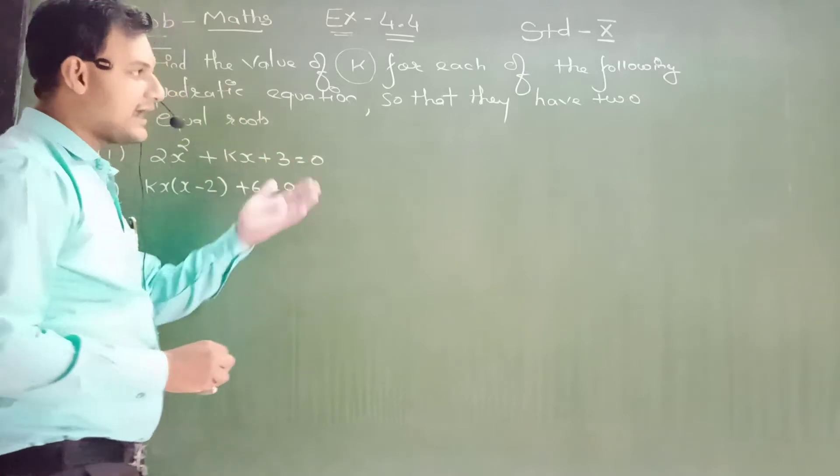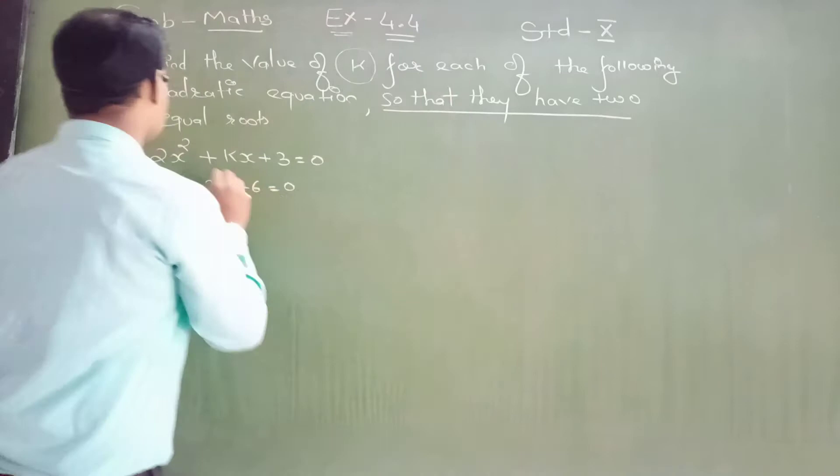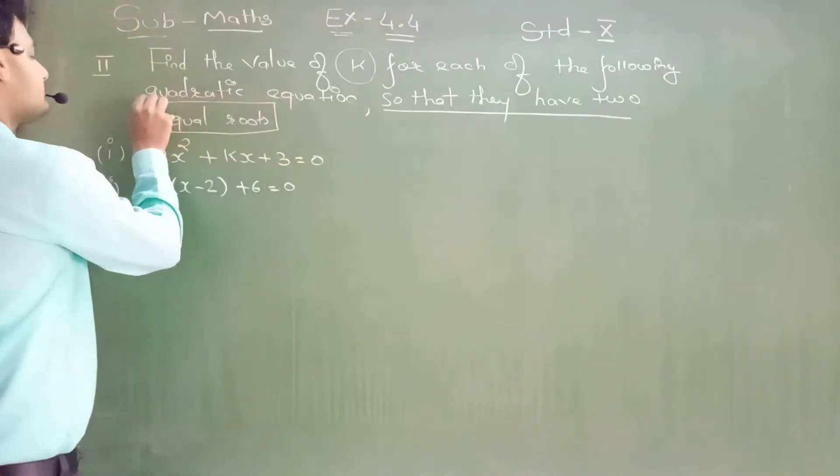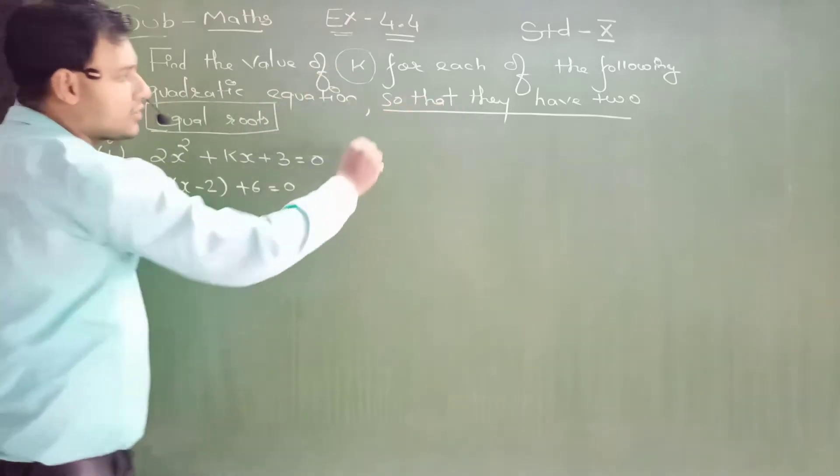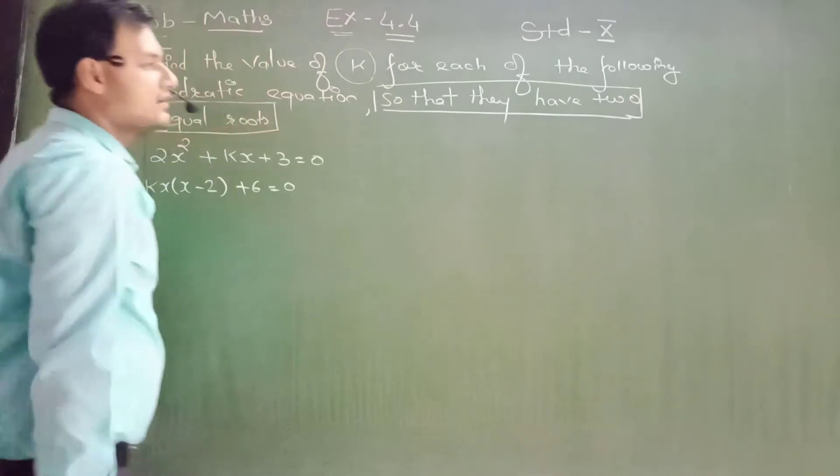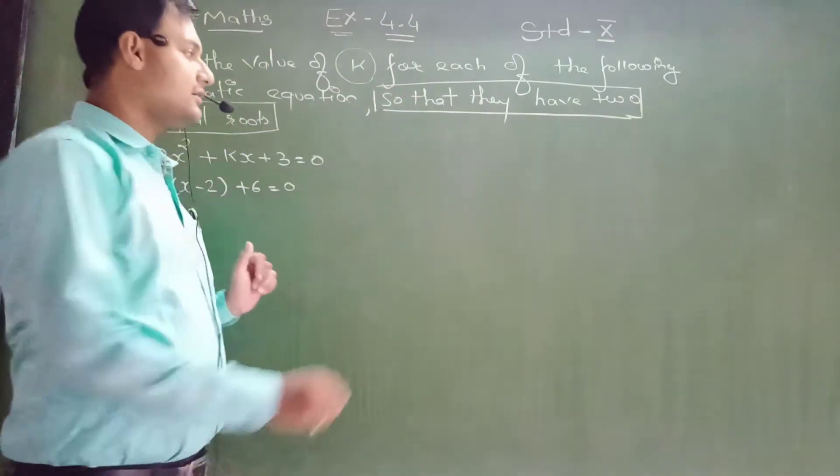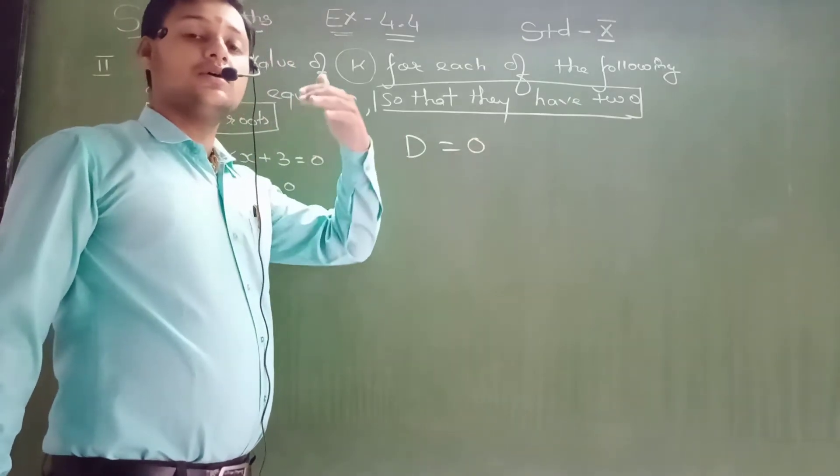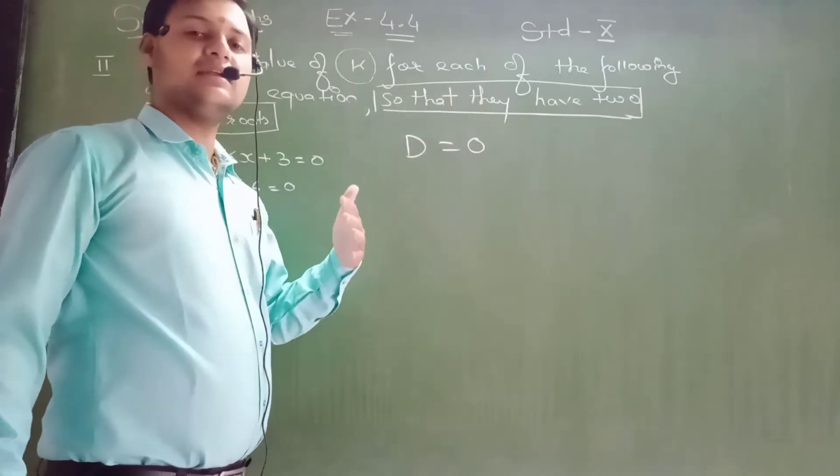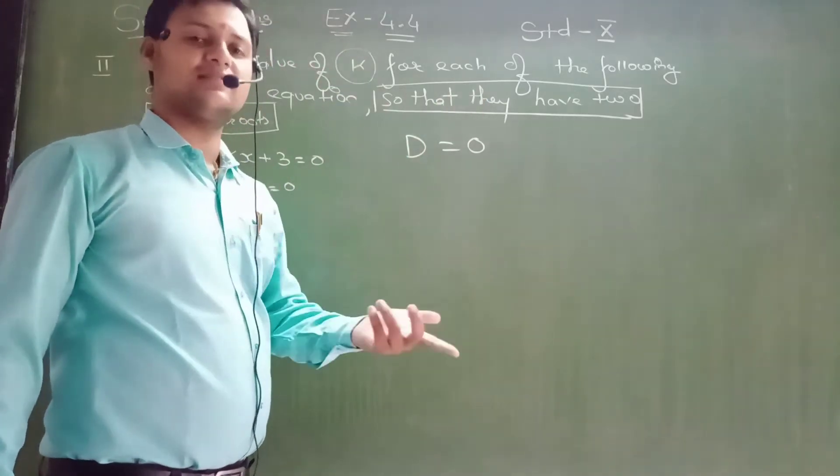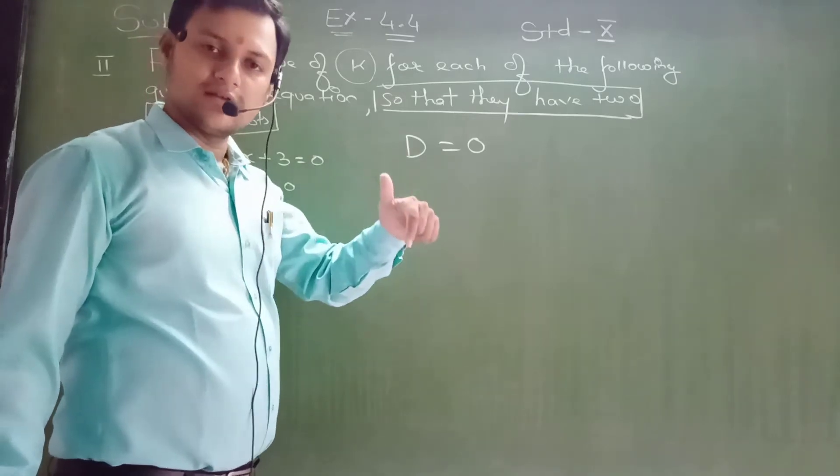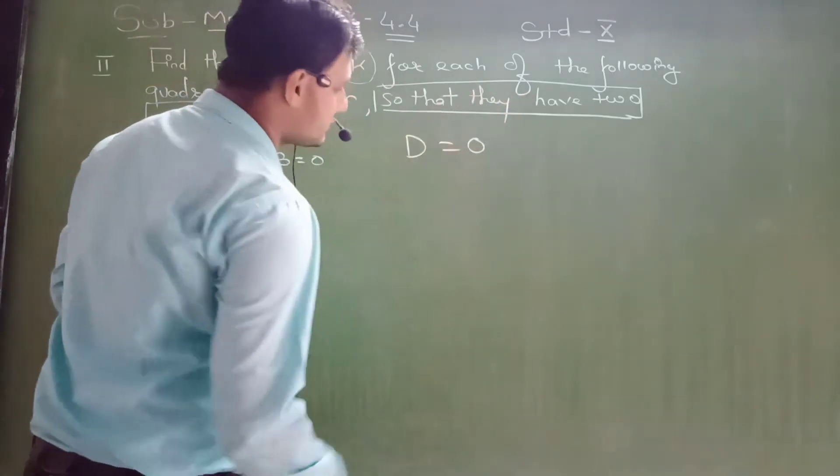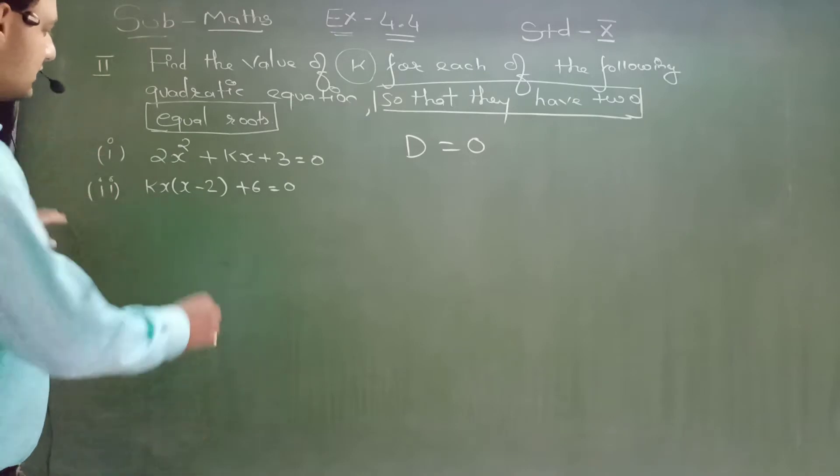So that they have two equal roots. This is most important. Dear students, two equal roots means D equals zero. If it has two distinct roots, it means D is greater than zero. Root does not exist means D is less than zero. Here, they have two equal roots, it means D equals zero.